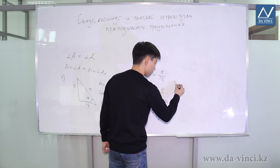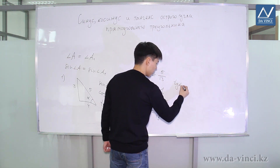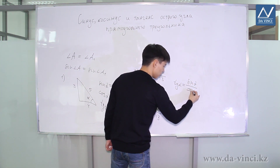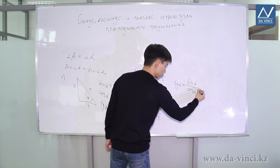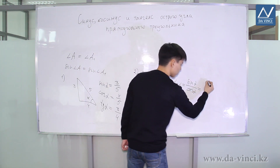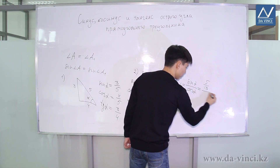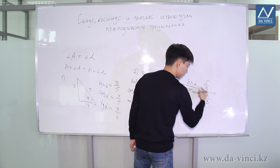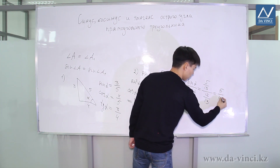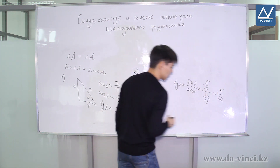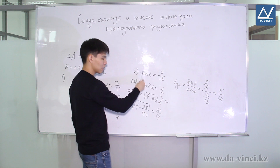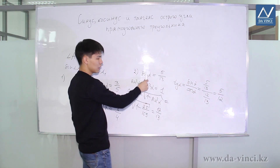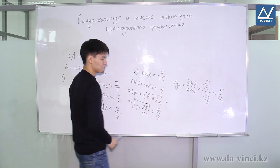To find the tangent, we use the formula we proved: we only need to divide sine by cosine. Sine is 5 thirteenths divided by 12 thirteenths — reducing the 13s, we get 5 twelfths. Thus we found the cosine and tangent knowing only the sine. It is possible to find the sine and tangent in the same way knowing only the cosine.